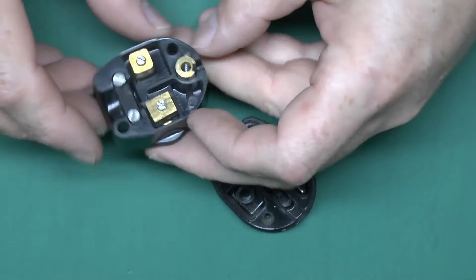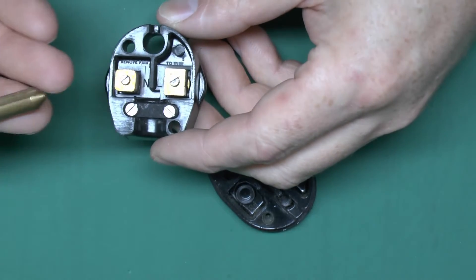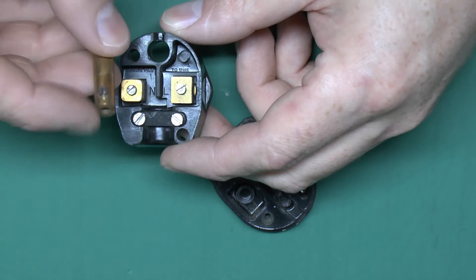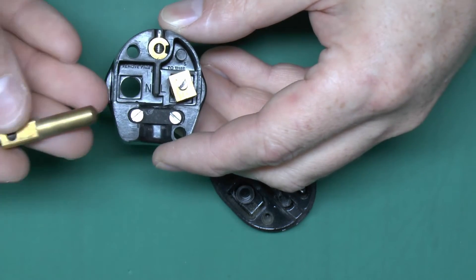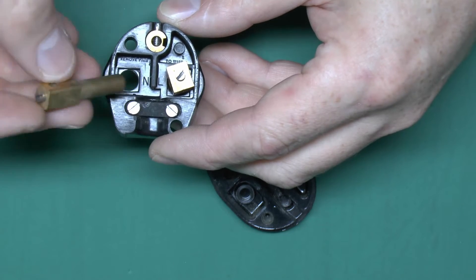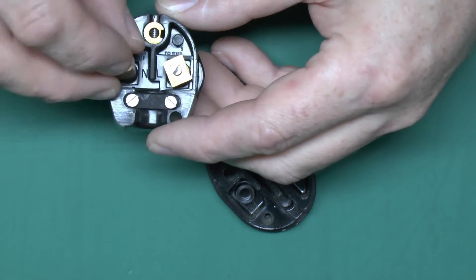Inside there, fairly straightforward. There's the earth pin there, just a solid brass, single screw in the end. Neutral pin again is just a solid brass component with the hole for the wire on the top.